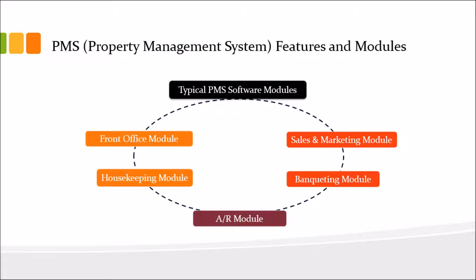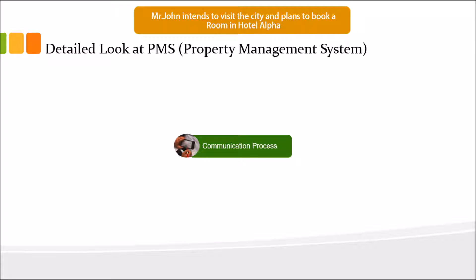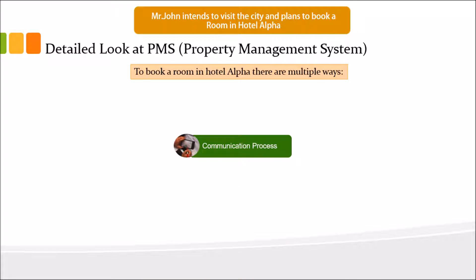Now we will talk about Mr. John, a guest who intends to visit the city and plans to book a room in Hotel Alpha. We are discussing the communication process within the PMS front office module. There are multiple ways to book a room — option one is to directly call the hotel and book a room over the telephone, which is a very easy and convenient way.